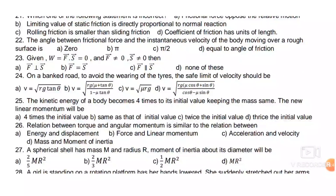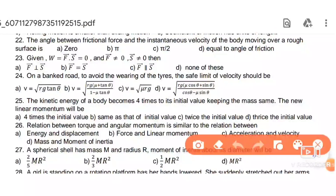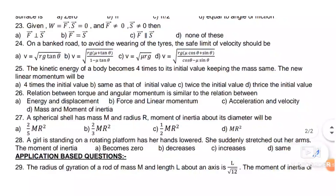Next: on a banked road, to avoid wearing of tires, the safe limit of velocity is v = √(rg tan θ).